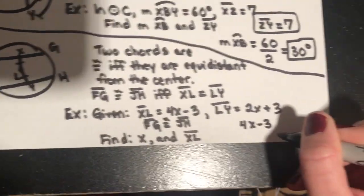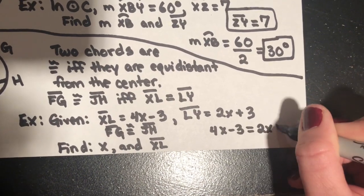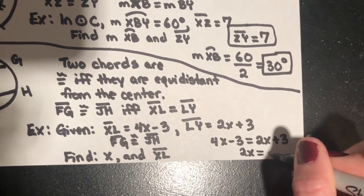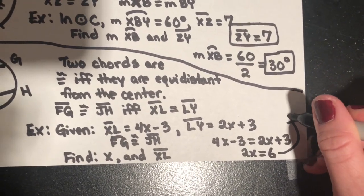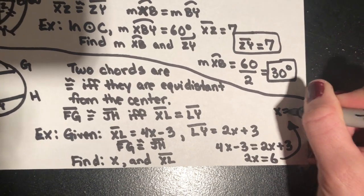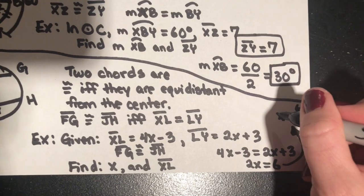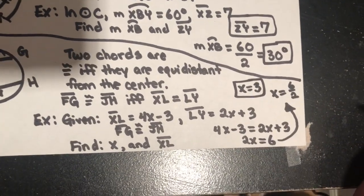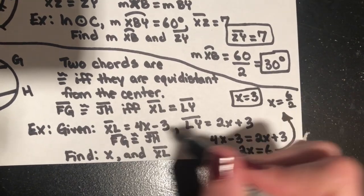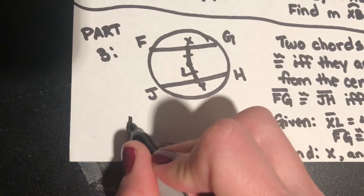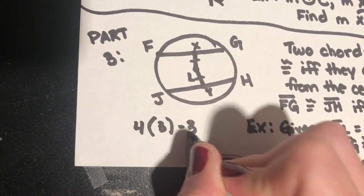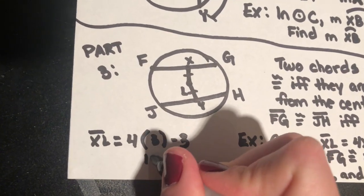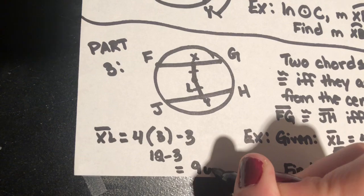We have 4x minus 3 equals 2x plus 3. Add 3 to both sides and subtract 2x from both sides: 2x equals 6, so x equals 3. To find XL, plug x back in: 4 times 3 minus 3 equals 12 minus 3, which gives us XL equals 9 units.